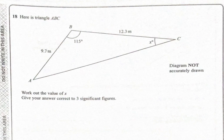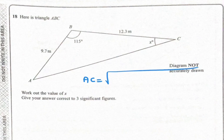So we need to find AC first using cosine rule. AC equals square root of 9.7 squared plus 12.3 squared minus 2 times 9.7 times 12.3 times cosine 150.